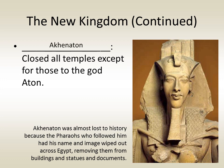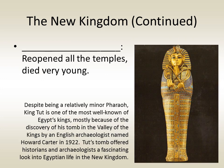There was also Akhenaten, a pharaoh who closed all the temples except those to the god Aten. He was nearly lost to history because the pharaohs who followed him had his name and image wiped out across Egypt — removed from documents, buildings, and statues. Following Akhenaten was a young pharaoh named Tutankhamen, who reopened all the temples and died very young. Despite being a relatively minor pharaoh, King Tut is one of the most well-known Egyptian kings, largely due to the discovery of his untouched tomb in the Valley of the Kings by English archaeologist Howard Carter in 1922, offering a fascinating look into Egyptian life during the New Kingdom.